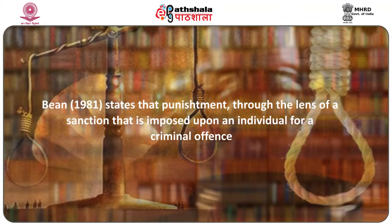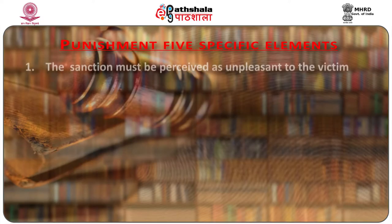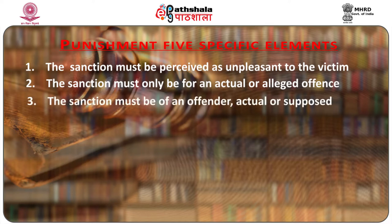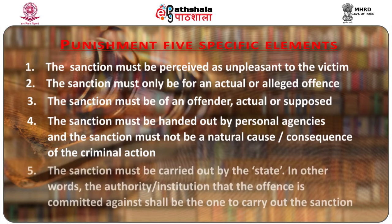How do we define punishment? Bean has stated that punishment can be seen through the lens of sanction imposed upon an individual for a criminal offence, and it is made up of five specific elements. First, the sanction must be perceived as unpleasant to the victim. Second, the sanction must only be for an actual or alleged offence. Third, the sanction must be of an actual or supposed offender. Fourth, the sanction must be handed out by personal agencies and must not be a natural cause or consequence of the criminal action. Fifth, the sanction must be carried out by the state — the authority and institution against which the offence is committed.